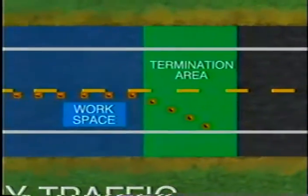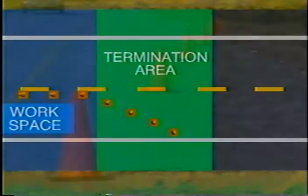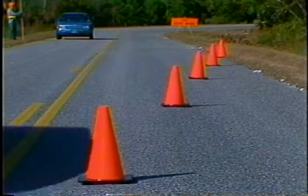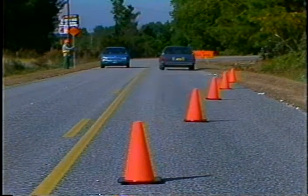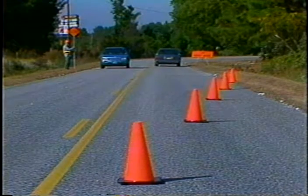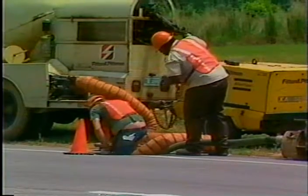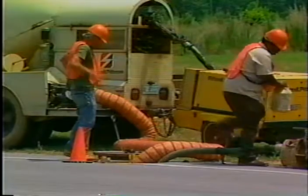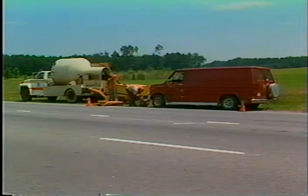The termination area provides a short distance for traffic to clear the activity area and return to the normal traffic lanes. It extends from the downstream end of the activity area to the end road work sign. A downstream taper may be placed in the termination area. For some work operations, such as a single location utility or maintenance repair, it may not be necessary to display an end road work sign because it will be obvious to drivers that they have passed the activity area.